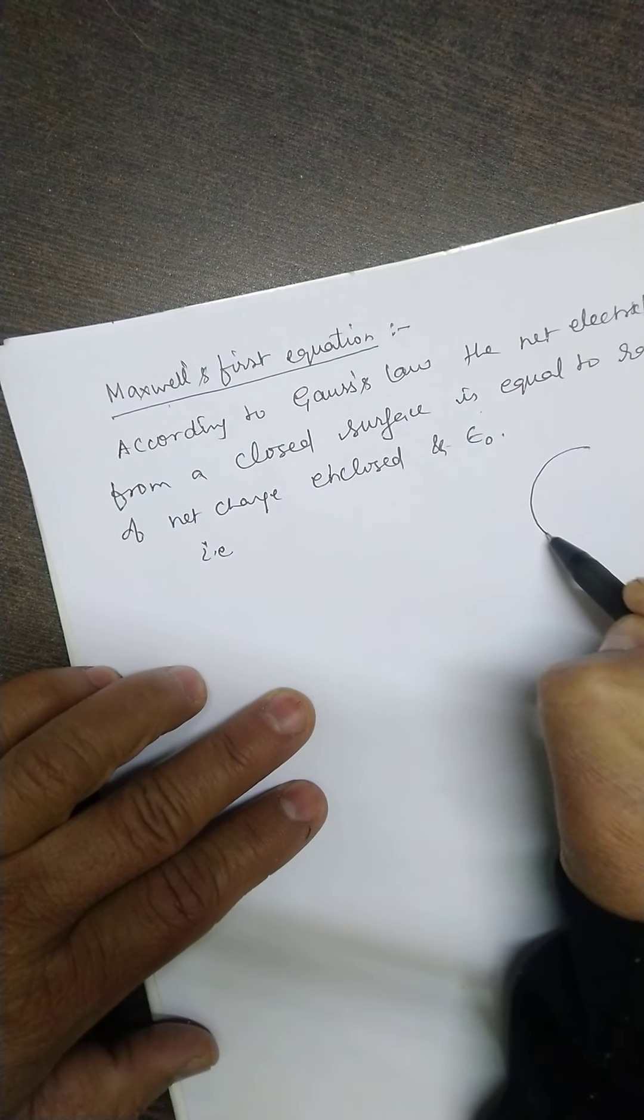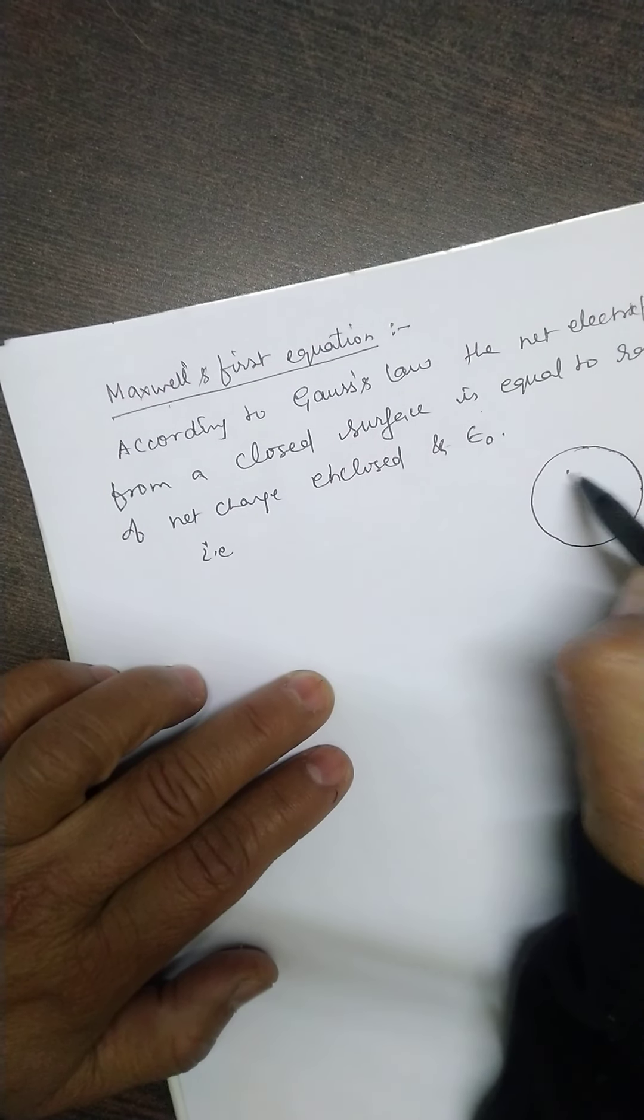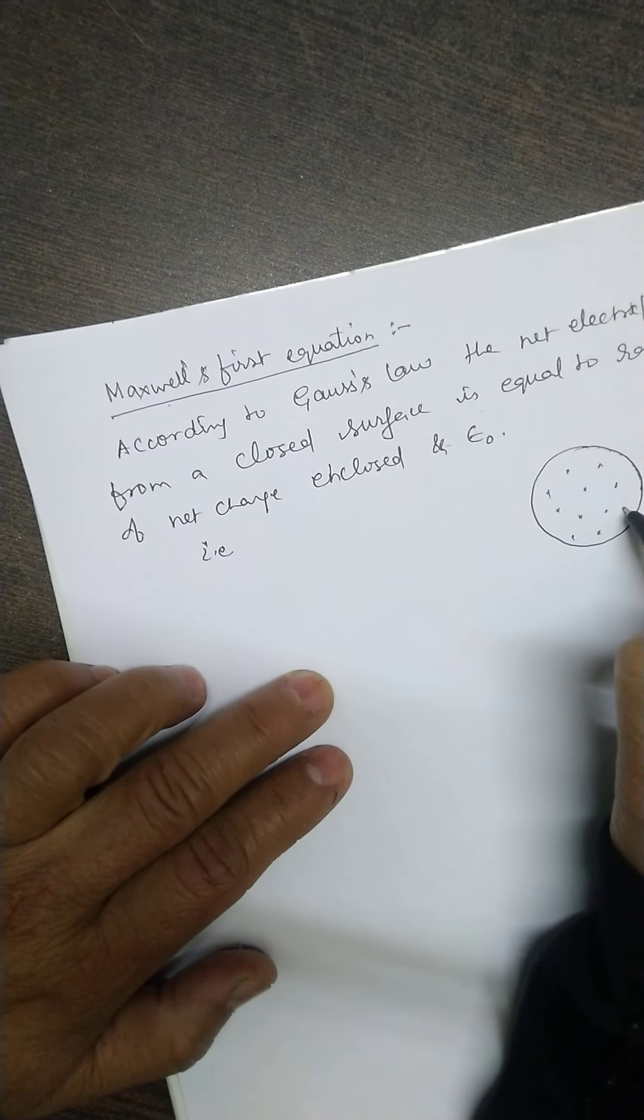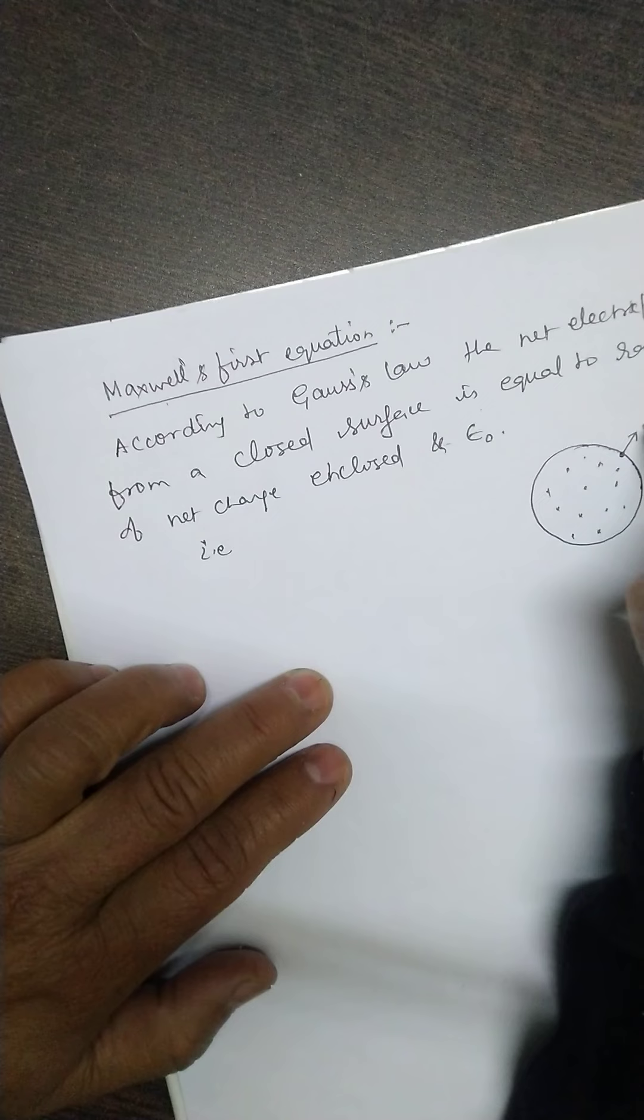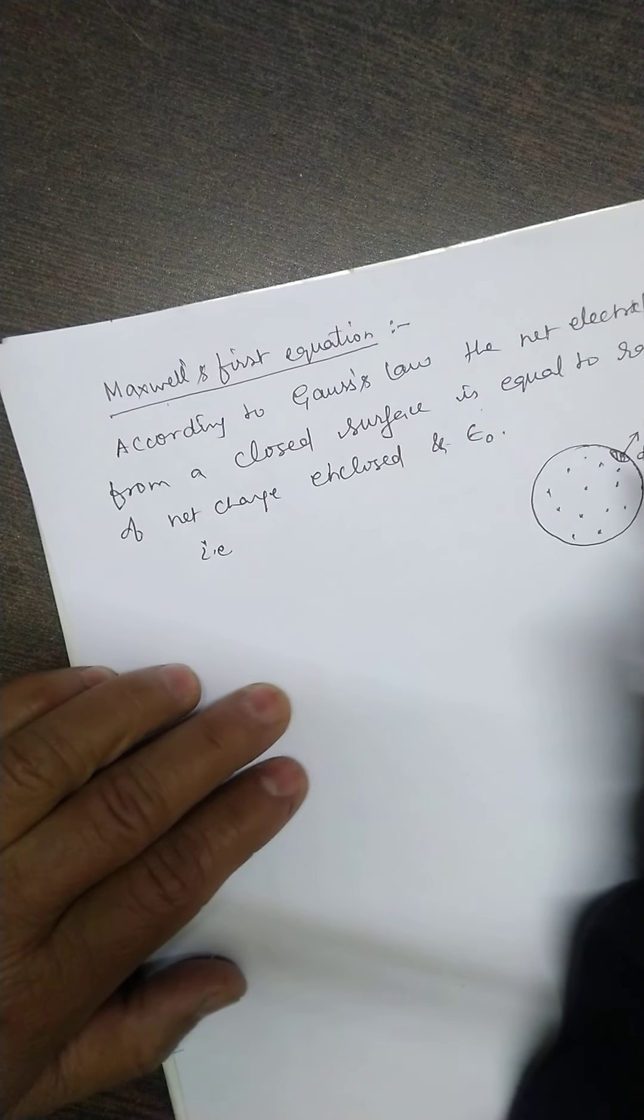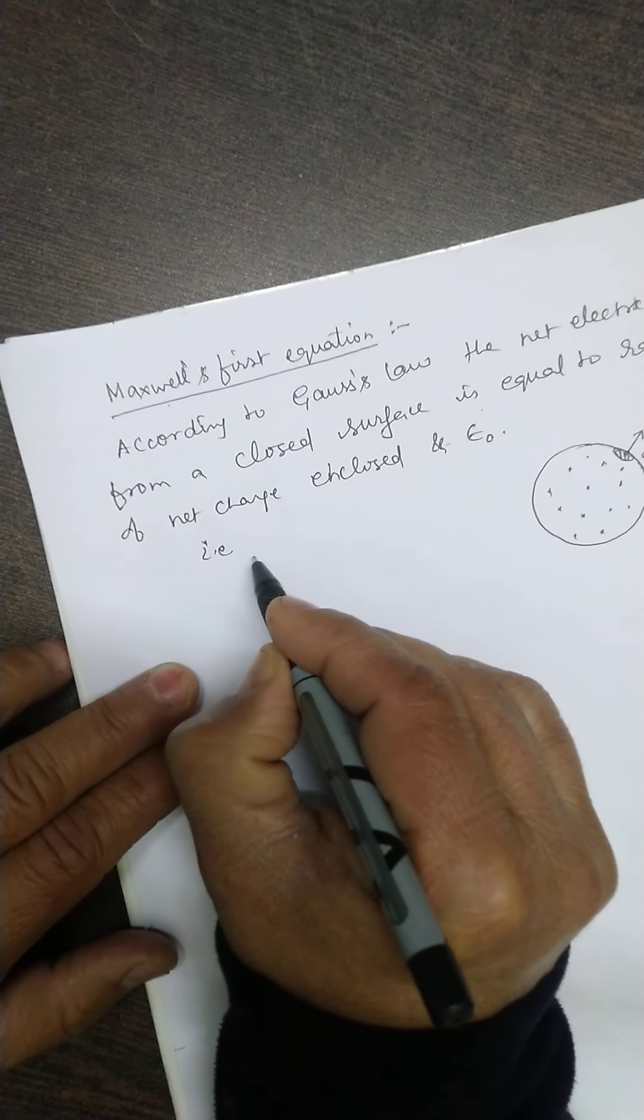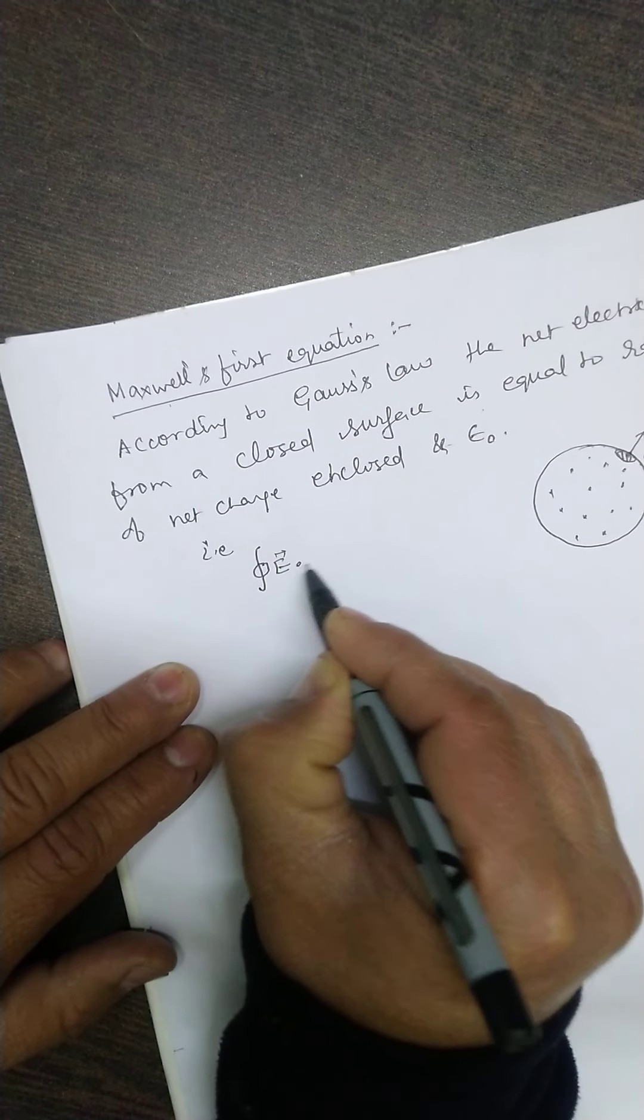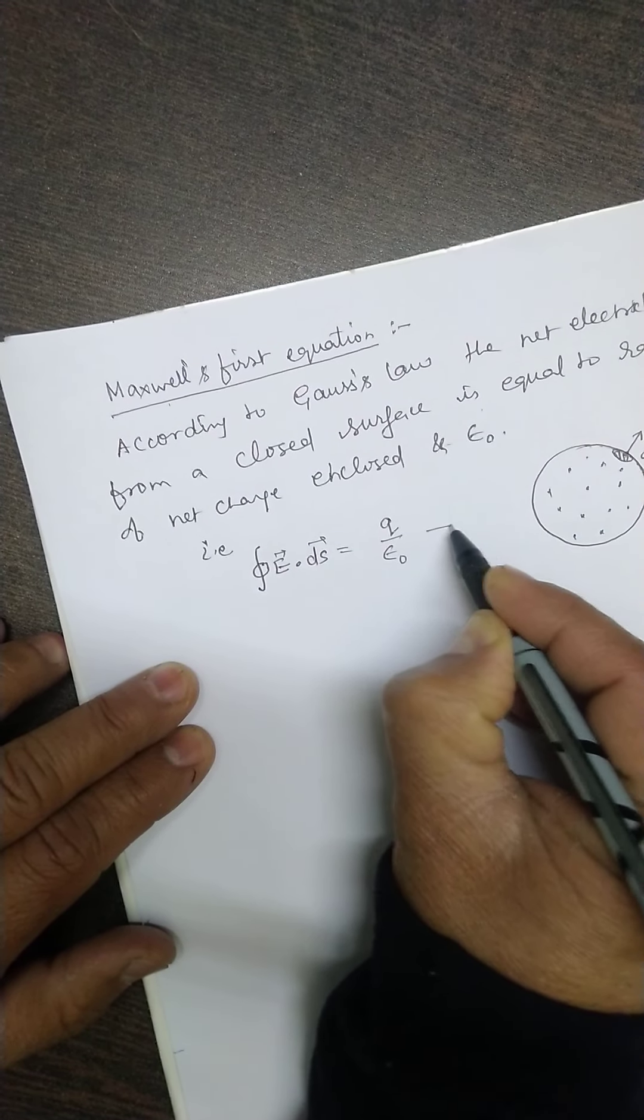Suppose I consider a spherical Gaussian surface. It must be closed, and charges are distributed all along this volume enclosed by it. At any point on the surface, if the electric field is E and I consider a very small area element ds, the net electric flux from the closed surface is E dot ds, and that must be equal to the charge divided by epsilon 0. This is Gauss's law.